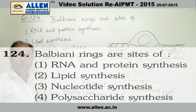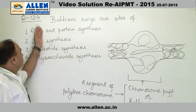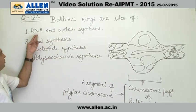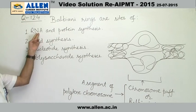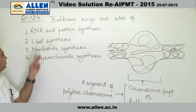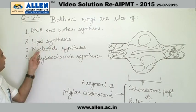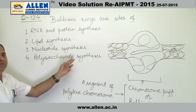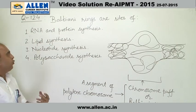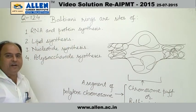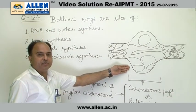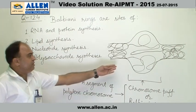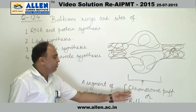We are taking up question number 124. The question asks about what balbiani rings are sites of. The options are: RNA and protein synthesis, lipid synthesis, nucleotide synthesis, and polysaccharide synthesis. First, let us look at what balbiani rings are. Balbiani rings are less condensed segments of polytene chromosomes. These less condensed segments are also called chromosome puffs.